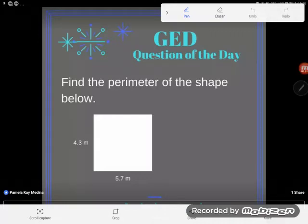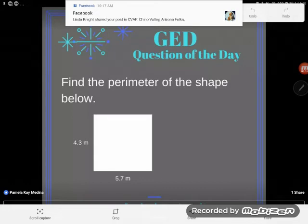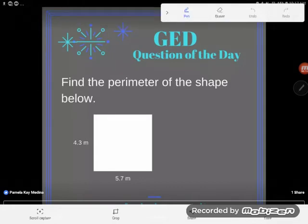Okay, let's take a look at today's GED question of the day. It says find the perimeter of the shape below. Now if you've been watching the videos lately, then you probably know how to find a perimeter by definition. The definition of a perimeter is the distance around the outside of a shape.